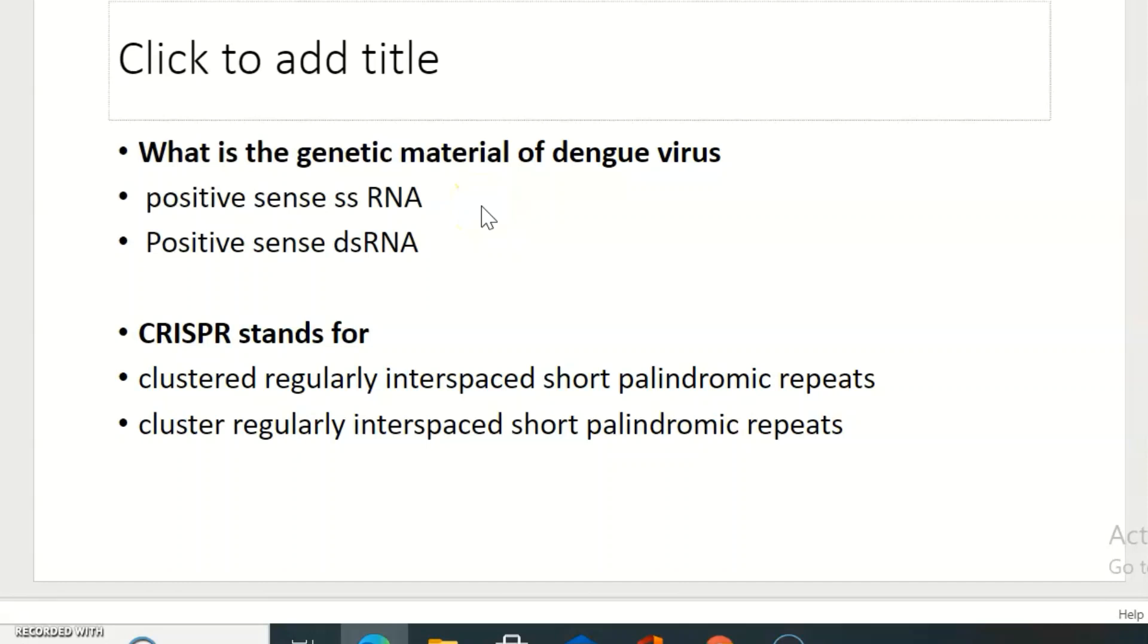What is the genetic material of dengue virus? Options are positive sense single-stranded RNA, positive sense double-stranded RNA. The right answer is positive sense single-stranded RNA.